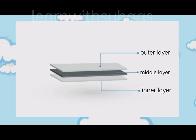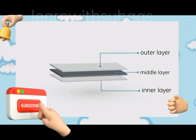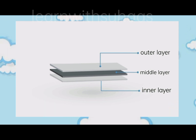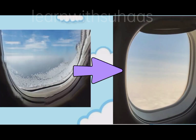Aeroplane windows are made up of an outer layer, middle layer, and inner layer — three layers. The tiny holes in the outer face absorb the brunt of cabin pressure in a gradual manner. During the flight, the tiny holes also help in releasing moisture from the air gap, thus preventing frosting of the windows.